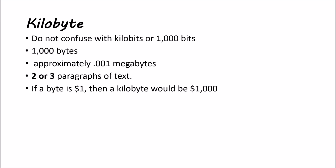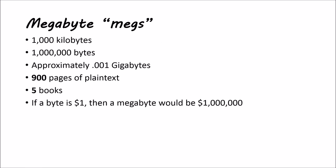After kilobytes, we have the next larger unit: megabytes, also called megs. You might hear someone say they have a certain number of megs, or that a program is so many megs in size — they're talking about megabytes. A megabyte is 1,000 kilobytes, or one million bytes — one one-thousandth of a gigabyte. We're talking about roughly 900 pages of plain text, or about five e-books. If a byte is $1, then a megabyte would be about one million dollars.